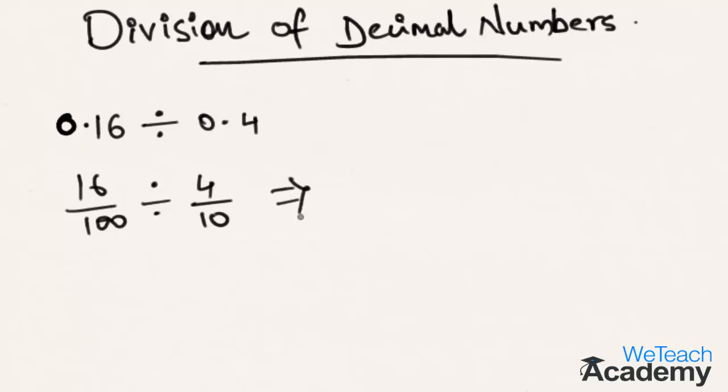Now division of fractions becomes 16 by 100 multiplied by the reciprocal of the other fraction. That is, 4 by 10 becomes 10 by 4. Now let us see if this can be simplified further. Yes, 4 one times is 4, and 4 four times is 16.